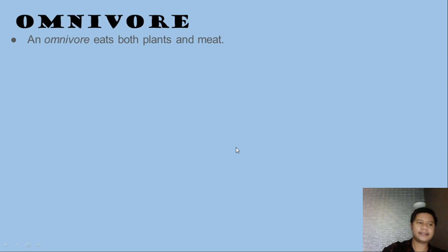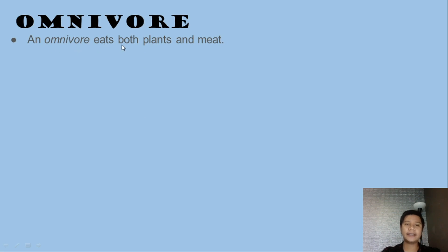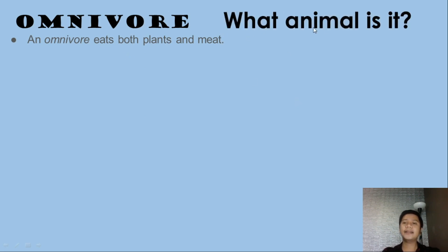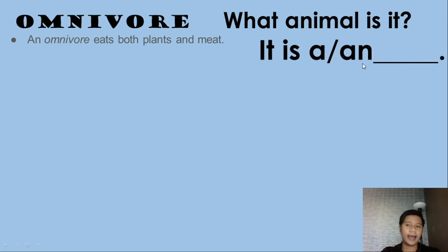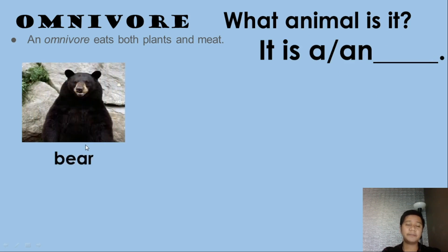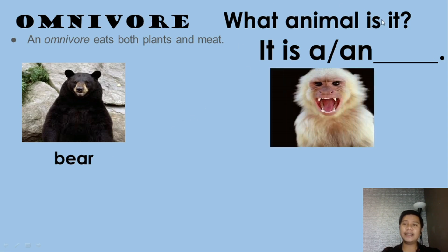Now the last one is what we call the omnivore. An omnivore eats both plants and meat. Here's the sentence structure: 'What animal is it? It is a/an [blank].' The first example — what animal is it? It is a bear. Very good!